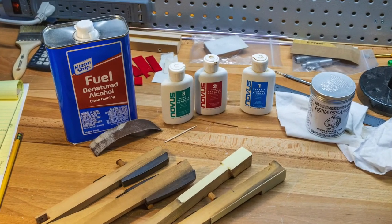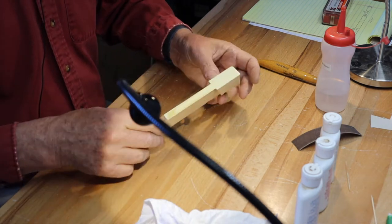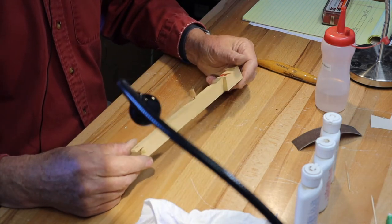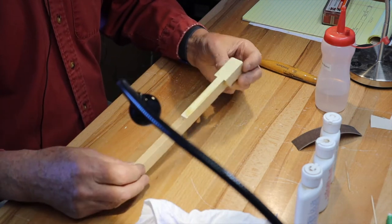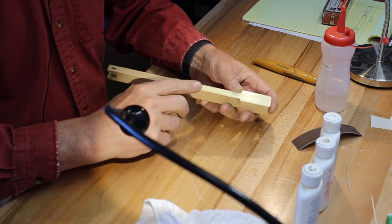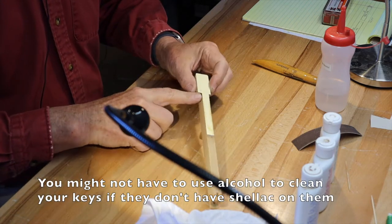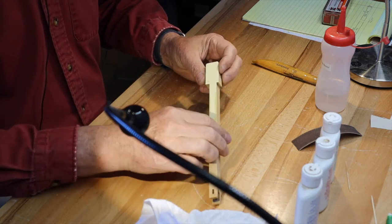Today we're going to work on cleaning keys, which is always an exciting job. This particular white key has got a bunch of shellac on it because somebody was deciding to brush shellac on the black keys and slopped it all over the place.